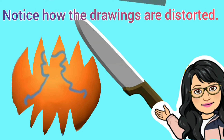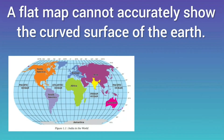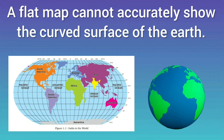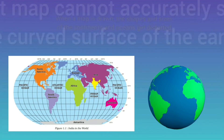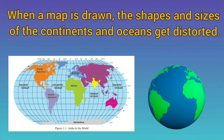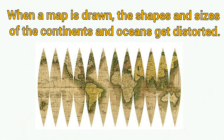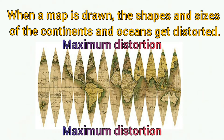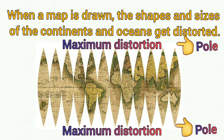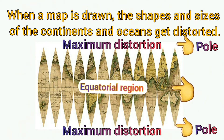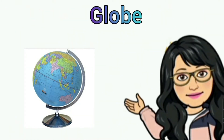Similarly, a flat map cannot accurately show the curved surface of the earth. When a map is drawn, the shapes and sizes of the continents and oceans get distorted. The maximum distortion occurs in the regions around the poles, while the equatorial region can be shown with reasonably less distortion. Hence it is suggested to use a globe.